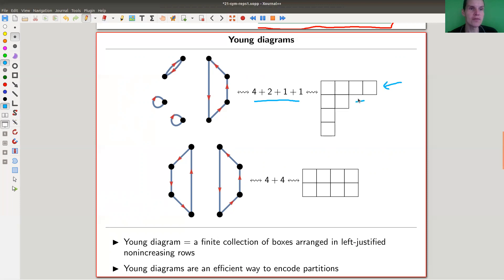So four, two, one, one, in the order given by the partition, and the partition by convention orders big numbers and then smaller numbers and smaller numbers and smaller numbers. So four, four,